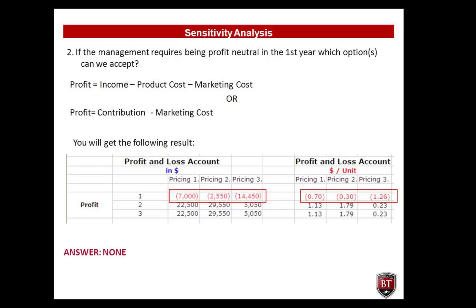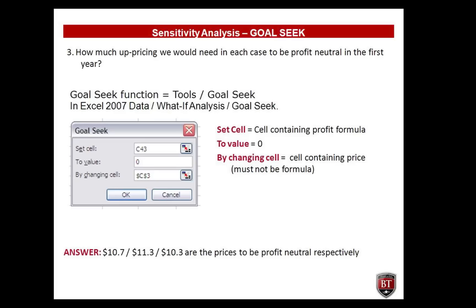Question number two: if management requires being profit neutral in the first year, which option or options can we accept? Profit equals income minus product cost minus marketing cost, or equivalently, profit equals contribution minus marketing cost. The solution is circled in red on screen — all numbers are negative. The answer, therefore, is none. We cannot accept any of the scenarios in the first year.